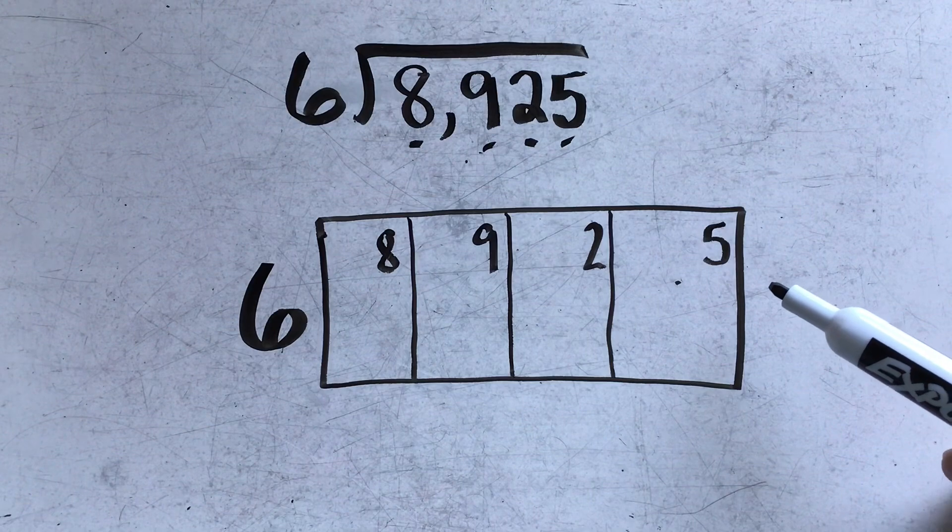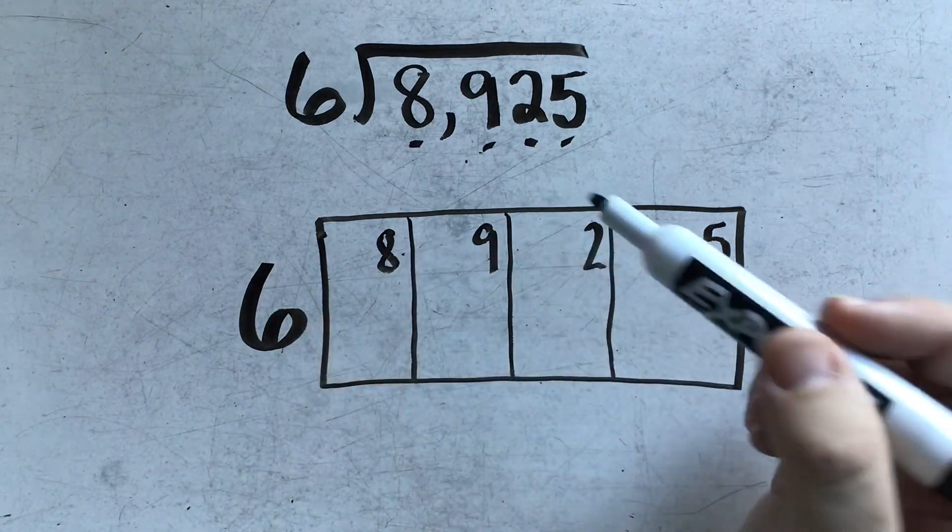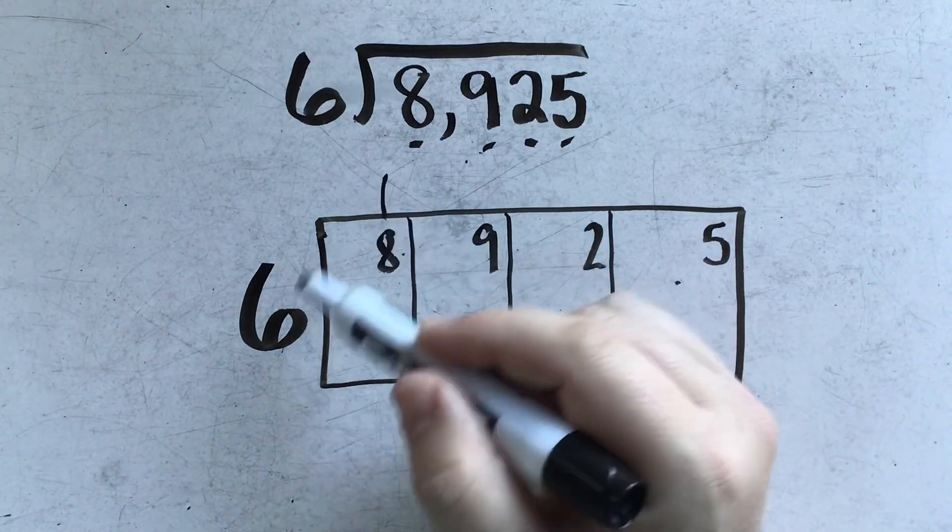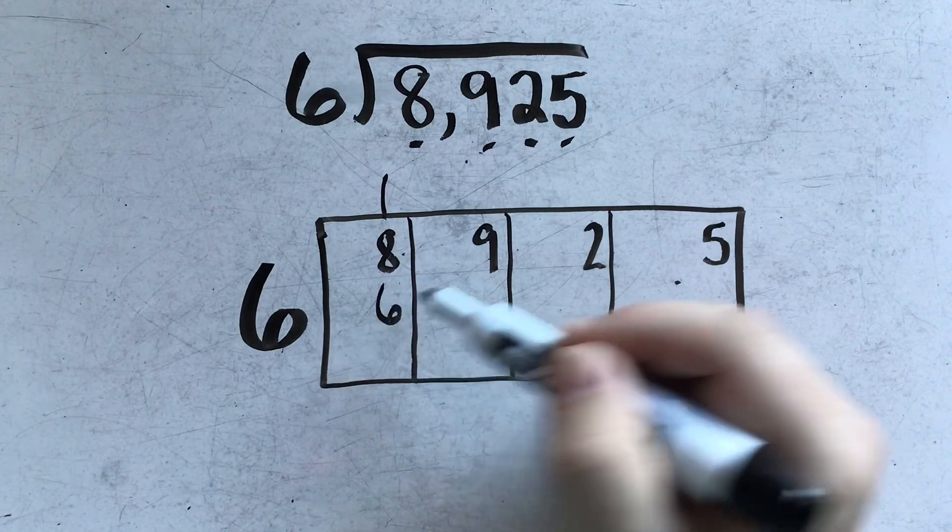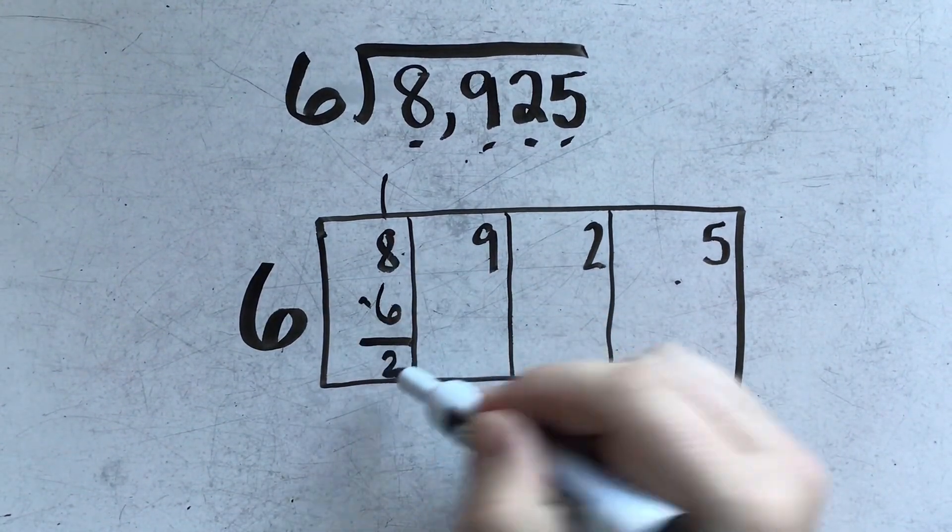So here I have the problem set up, and now I'm going to just continue dividing like I would normally. I start with the first box, and I say that 6 can divide 8 one time, 1 times 6 is 6, and when I subtract I end up with 2 left over.